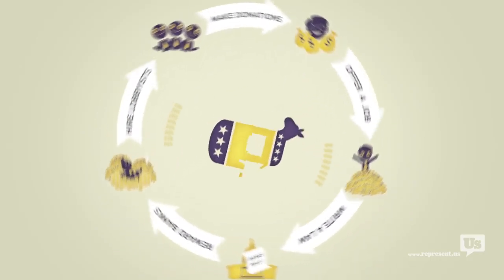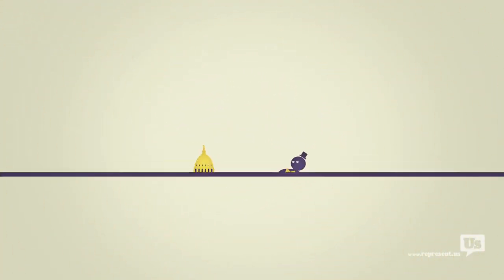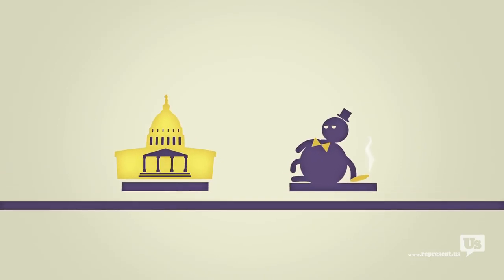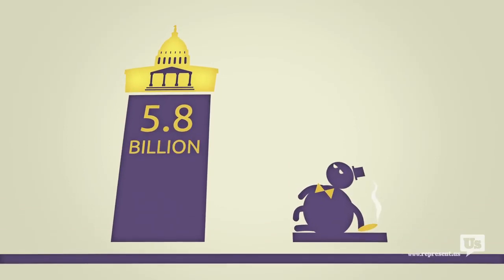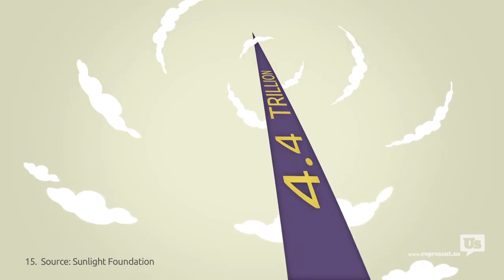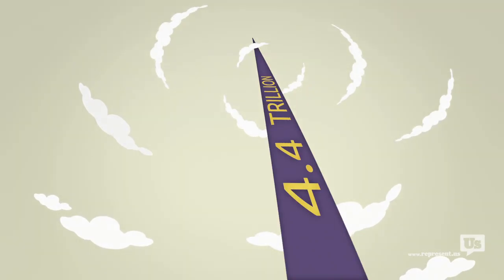This happens every day on every single issue with politicians of both parties. In the last five years alone, the 200 most politically active companies in the United States spent $5.8 billion influencing your government. Those same companies got $4.4 trillion in taxpayer support. And that's trillion. With a T. And that's just the top 200 companies.